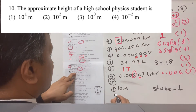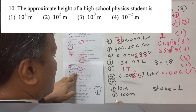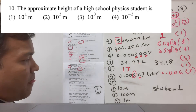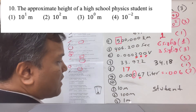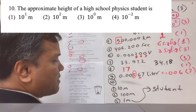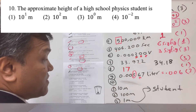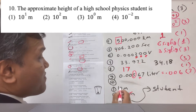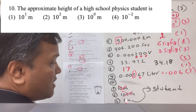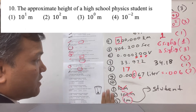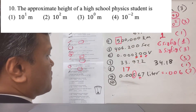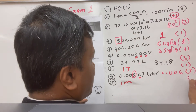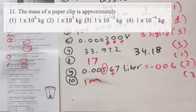Question number ten: what is the approximate height of a student? The options are 10 meters, 100 meters, 1 meter, and 1 centimeter. I've never seen a human who is 1 centimeter, 100 meters, or 10 meters tall. A human is approximately one meter, so the answer is one meter — option number three.